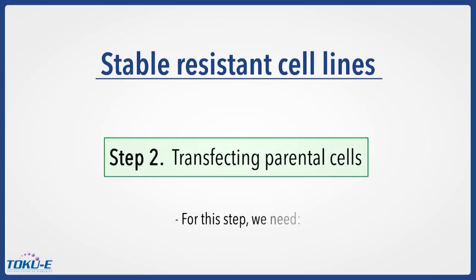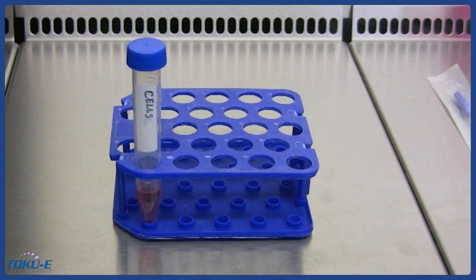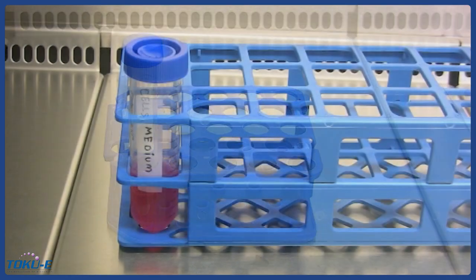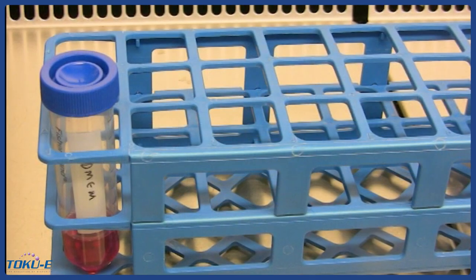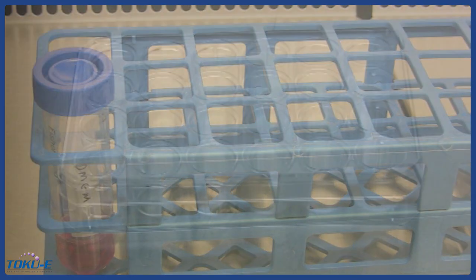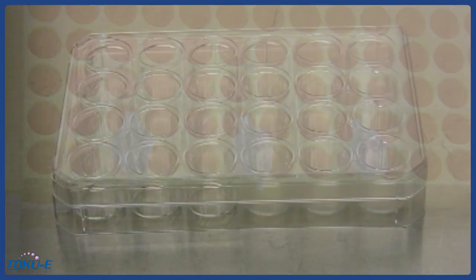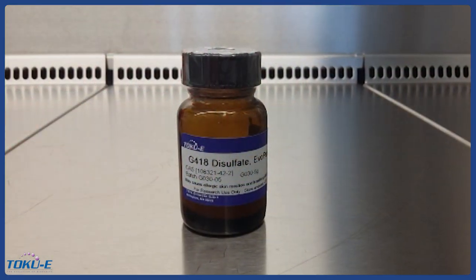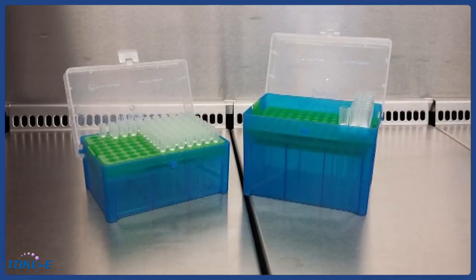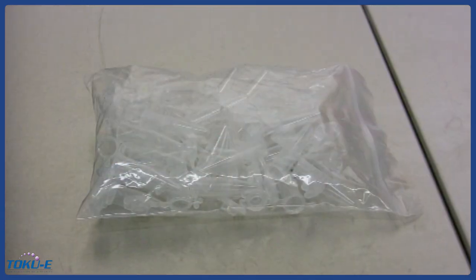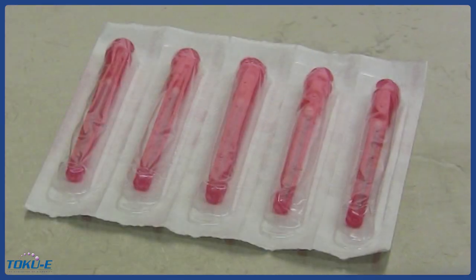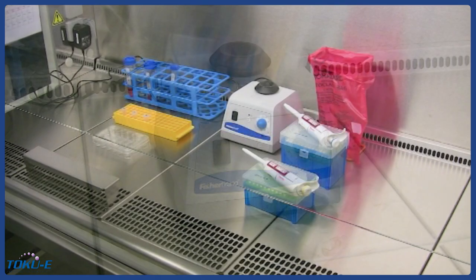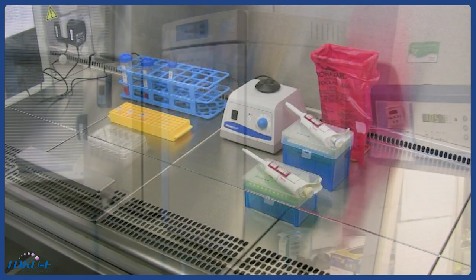For the transfection step, we need cells detached according to standard cell culture procedures, culture medium, medium without additives, a 24-well plate, transfection reagent, plasmid, selection antibiotic, tips, microtubes, needles, a vortex, a laminar flow, and an incubator.